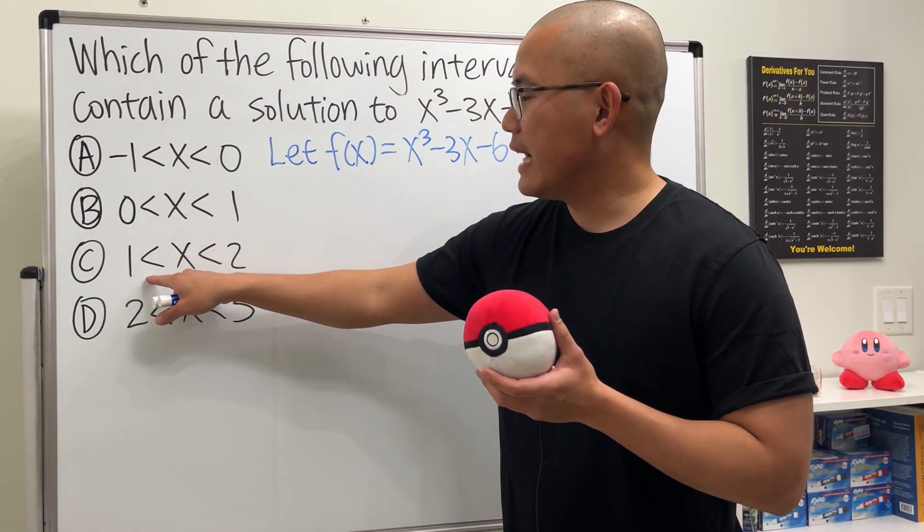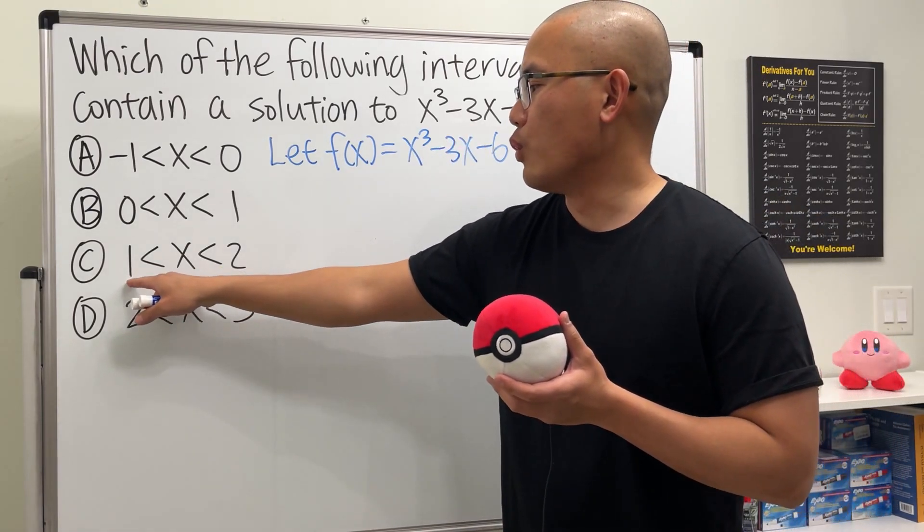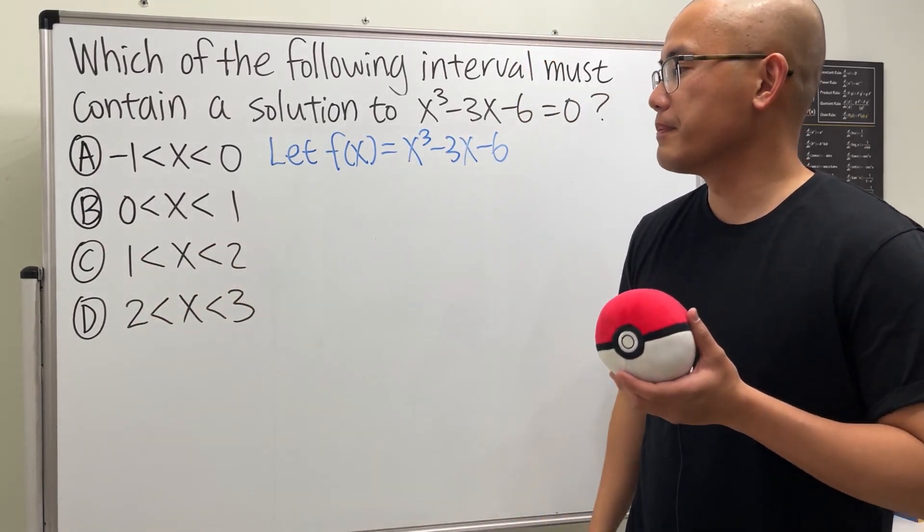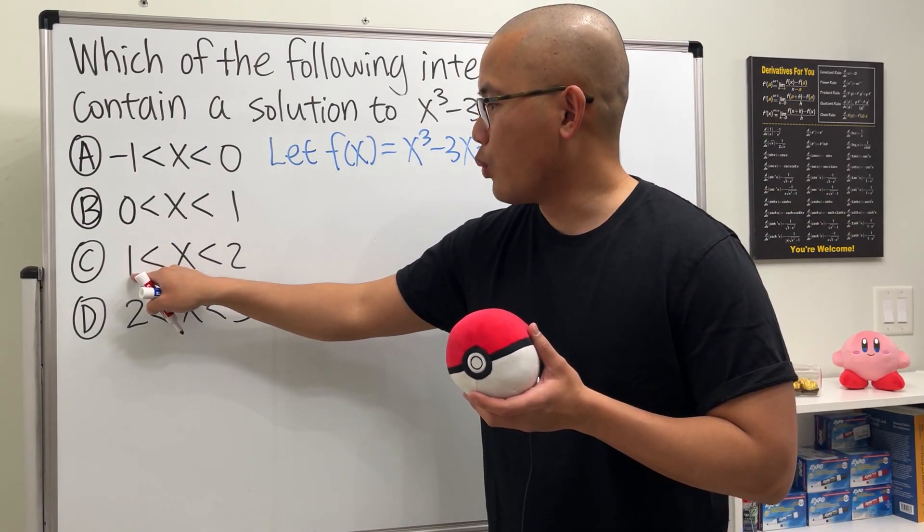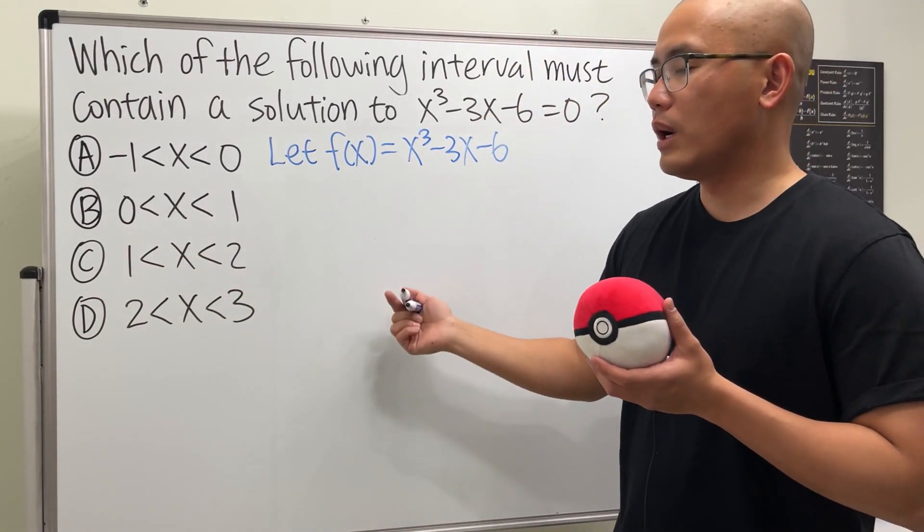And you see, this is saying that the answer must be in between of 1 and 2. And let's see if it works or not. And to do so, well, I'm just going to put 1 into the function here and see what happens.